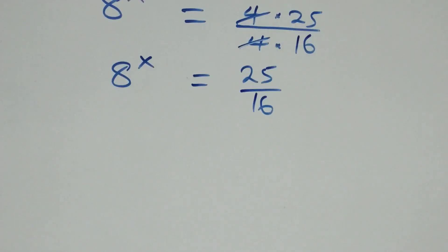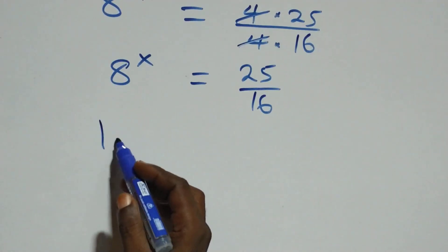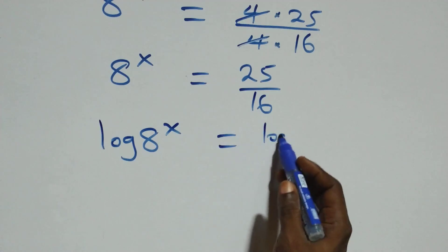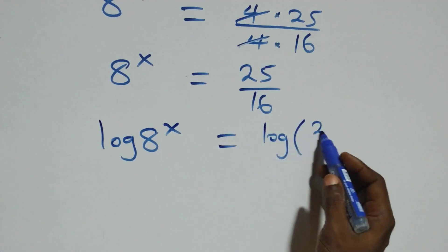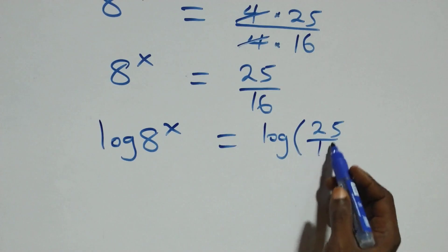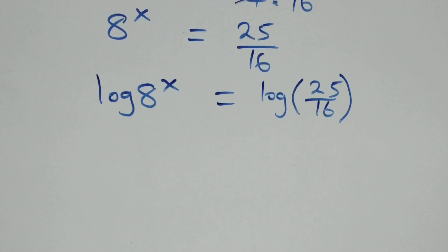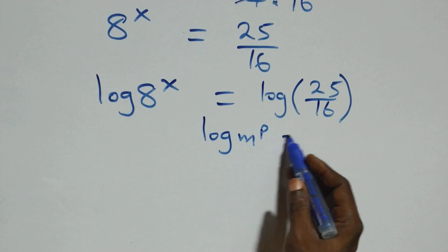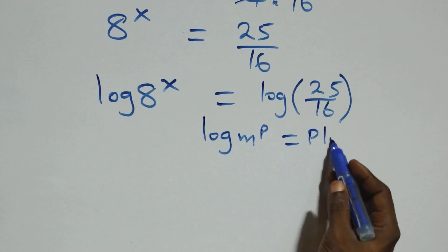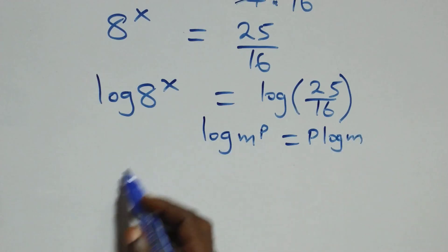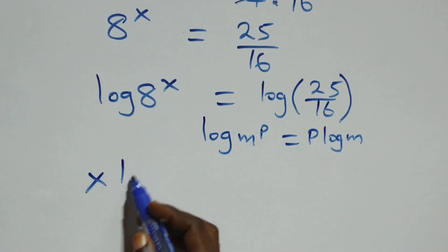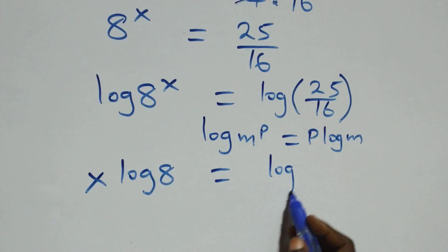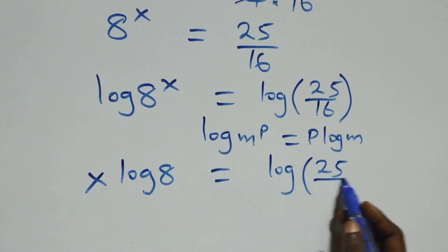Here we take the log on both sides, and we have log of 8 raised to power x equals log of 25 over 16. Then we apply the power law of logarithms: when we have log of m raised to power p, this is the same thing as p times log m. That gives us x log 8 equals log(25/16).